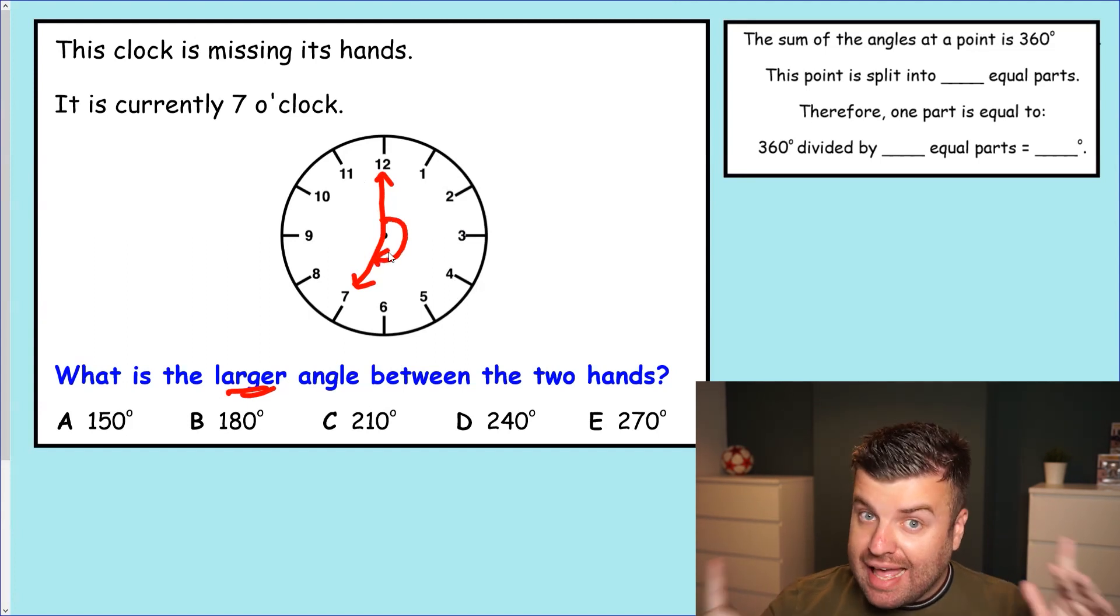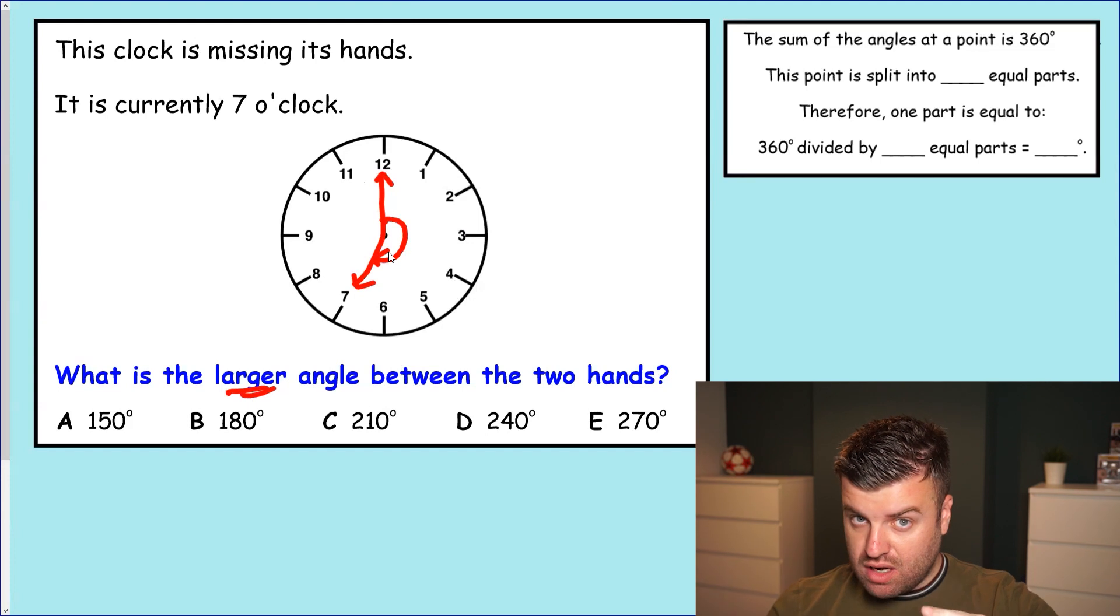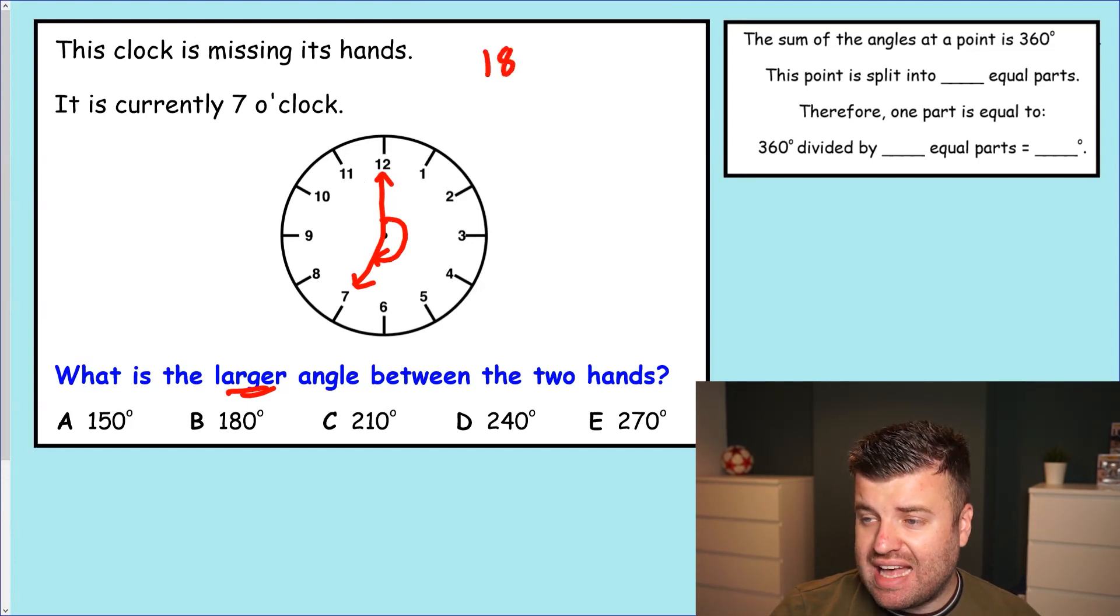And now we can use estimation to help. That's more than half a turn. So our angle has to be greater than 180 degrees when we calculate it. So we can use that to check later, but let's use the box in the top right to help us. The sum of the angles around the point is 360 degrees. That's never changing. The point is split into 12 equal parts because it's a clock face. There are 12 equal parts going around.